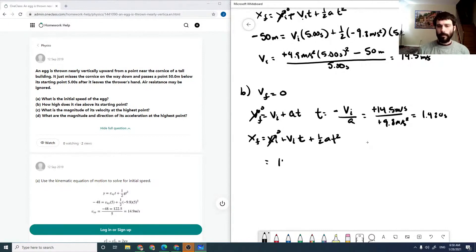So our vi is 14.5. The time we're using is 1.480 seconds. This is negative 9.8 meters per second squared. So this equals 10.727 meters.